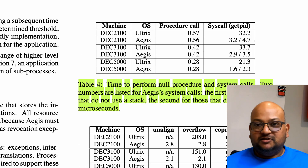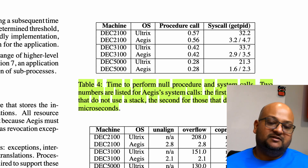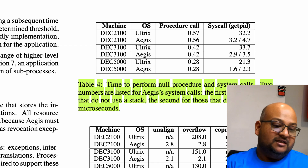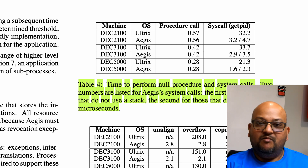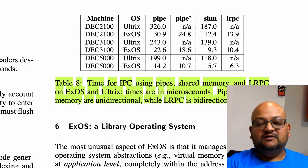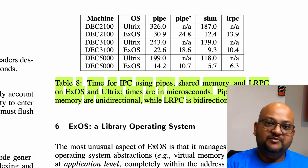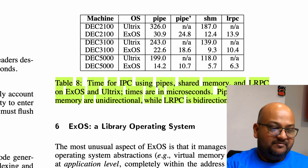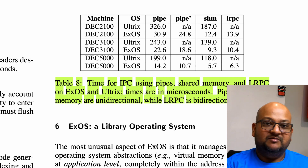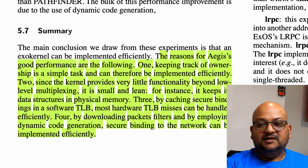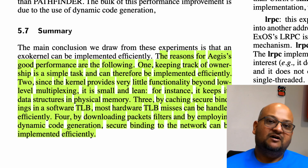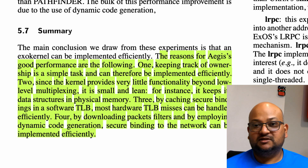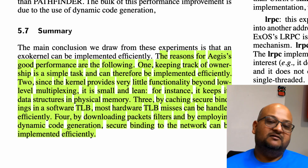Here they compare their exokernel and library operating system to Alteryx, which is a traditional Unix variant. Testing with a simple system call like getPID, an exokernel system call is about an order of magnitude faster than a traditional monolithic kernel like Alteryx. Looking at higher level mechanisms like inter-process communication using pipes or shared memory, again the exokernel is about an order of magnitude faster than Unix. This is not surprising given the architecture — the kernel only keeps track of ownership and protects resources without managing them, making it very light and fast.